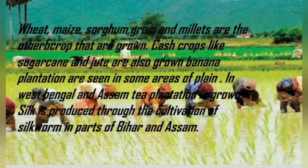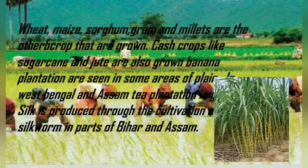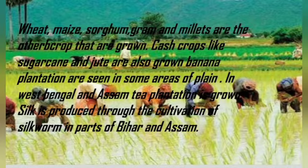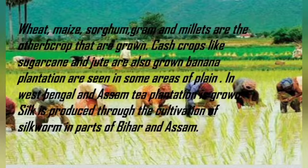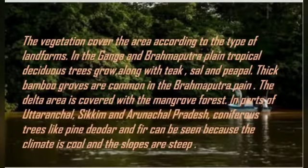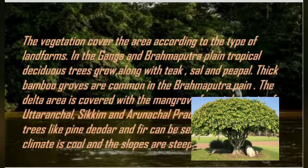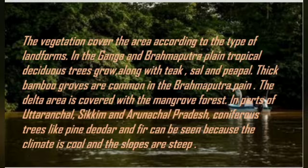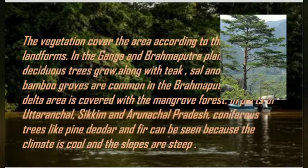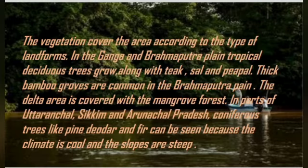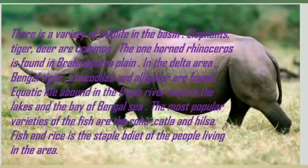Wheat, maize, sorghum, gram, and millet are the other crops that are grown. Cash crops like sugarcane and jute are grown. Banana plantations are seen in some areas of the plains. In West Bengal and Assam, tea plantations grow. Silk is produced through the cultivation of silkworms in parts of Bihar and Assam. The vegetation covers the area according to the type of landform. In the Ganga-Brahmaputra Plain, tropical deciduous trees grow, along with teak, sal, and peepal. Thick bamboo groves are common in the Brahmaputra Plain. The delta area is covered with mangrove forests. In parts of Uttarakhand, Sikkim, and Arunachal Pradesh, coniferous trees like pine, deodar, and fir can be seen because the climate is cool.